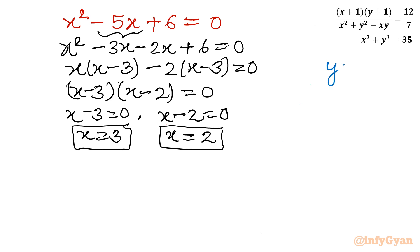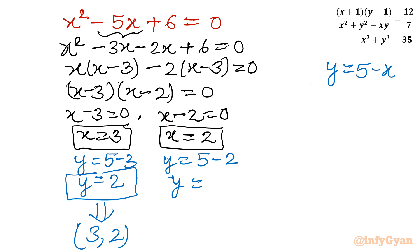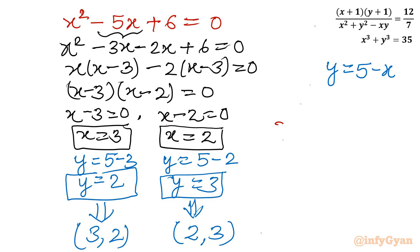Using y = 5 - x: when x = 3, y = 2; when x = 2, y = 3. The system generates two solutions: (x, y) = (3, 2) and (x, y) = (2, 3).